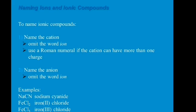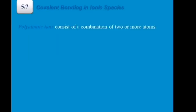For FeCl₃, we have iron(III) chloride. The Roman numeral indicates the charge of iron before it was shared to chlorine. Remember: you only put the Roman numeral in a chemical formula when a certain element possesses more than one possible charge. That is how you name ionic compounds.